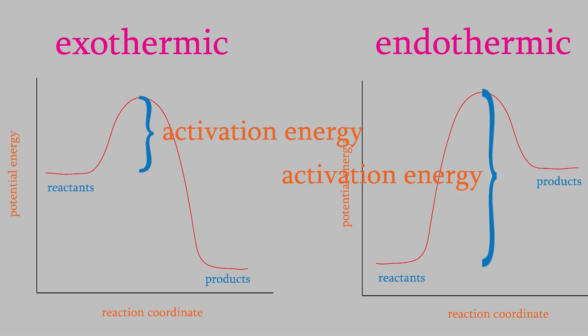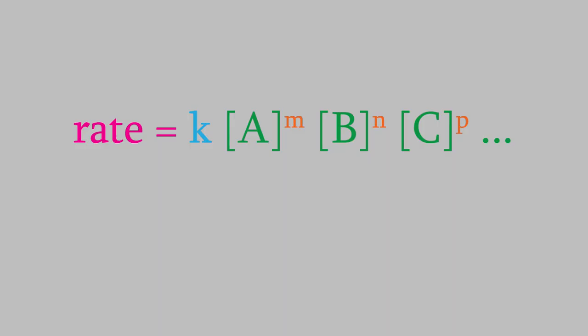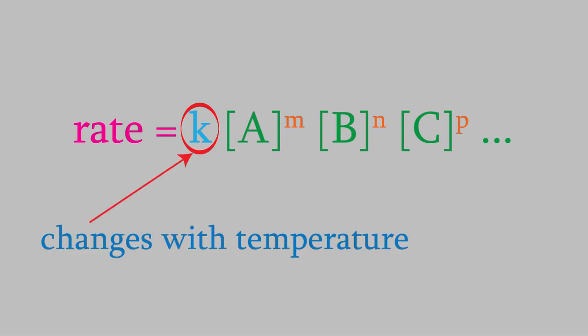But suppose our reactant molecules don't have enough energy to react when they collide. How can we give them more kinetic energy? As you might remember from our discussion of gas laws in General Chem 1, we can increase the kinetic energy by increasing the temperature. When we do that, it's more likely that the reactant molecules will overcome the activation energy barrier, so the rate of the chemical reaction will increase. But think about that. We know that the rate of a chemical reaction is determined by its rate law. You'll notice that this equation doesn't have temperature as part of it, but we just saw that the rate should increase when the temperature goes up. The key is the rate constant, k. It turns out that k changes when we change the temperature.